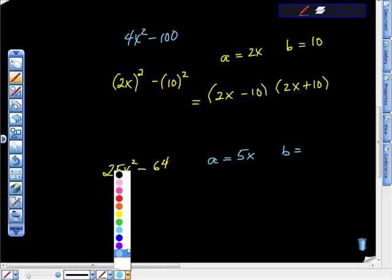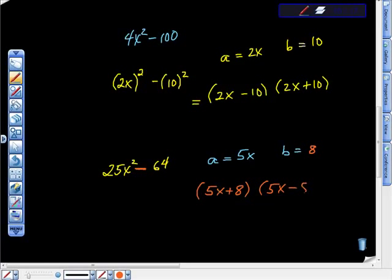if this thing right here is not a negative sign, the deal is off, right? It only works if this is a negative sign. And it is. So what's the square root of 64? And the square root of 64 is 8, isn't it? So that would give us (5x plus 8) times (5x minus 8).